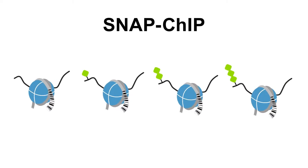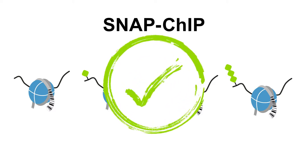SNAP-ChIP nucleosomes, in contrast, are homogenous, completely defined, and undergo rigorous quality control checks to ensure lot-to-lot consistency.